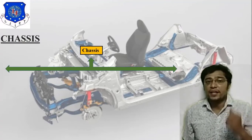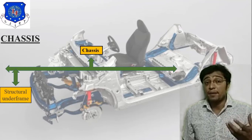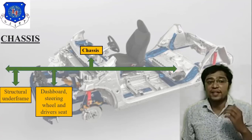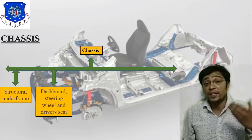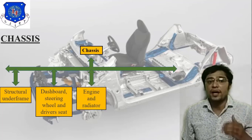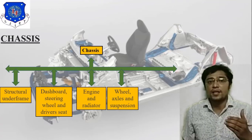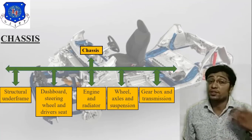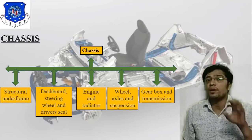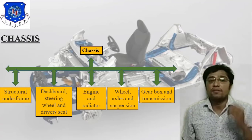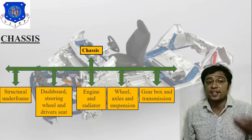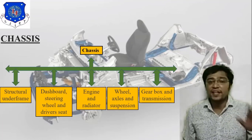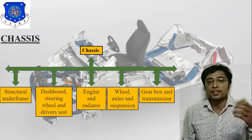Moving on to chassis — there are many parameters to consider. First is the structural under-frame. Second is the dashboard, steering system, wheel, and driver seat. Third is the engine and radiator. Fourth is the wheel, axle, and suspension. Fifth is the gearbox and transmission. Integration of all these five parameters allows you to construct the chassis. Different vehicle types — cars, buses, and auto-rickshaws — all have different types of chassis.